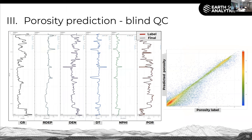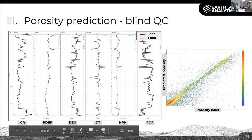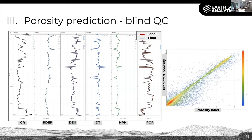This is an example of a porosity prediction and a blind well QC. You can see the features we use: gamma ray, resistivity, density, N-phi, DT logs. The panel to the far right shows where we have the blind prediction of porosity and the label, and you can see the two plot very close to each other, meaning our model is performing well. The cross-plot shows porosity label plotted against predicted porosity, and you can see a very good correlation with our label data set.